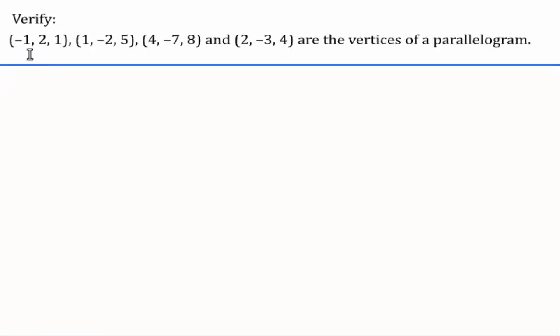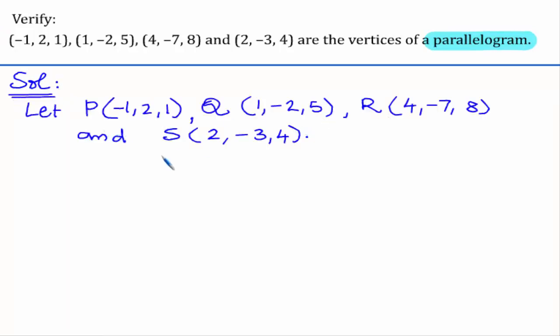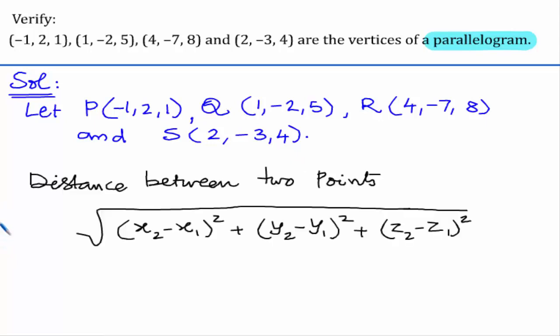In this question, we are given four points and need to verify whether they are vertices of a parallelogram or not. Let us assume the given points as P, Q, R, S. P is (-1, 2, 1), Q is (1, -2, 5), R is (4, -7, 8), and S is (2, -3, 4). The distance formula is the square root of (x2 minus x1) whole square plus (y2 minus y1) whole square plus (z2 minus z1) whole square.